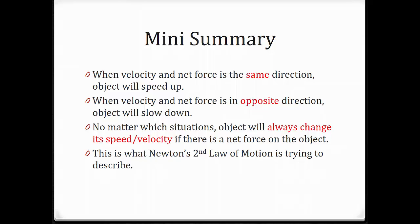So just a summary: if the velocity and net force are in the same direction, the object will speed up — both positive will speed up, and both negative will also speed up. But if velocity and net force are in opposite directions — one positive and one negative — the object will slow down. No matter which situation, the object will always change its velocity whenever there's a net force or unbalanced force on it. This is simply what Newton's second law of motion is trying to describe.